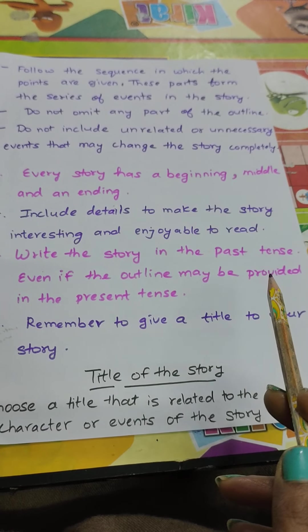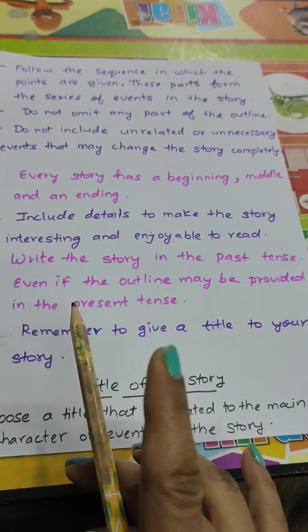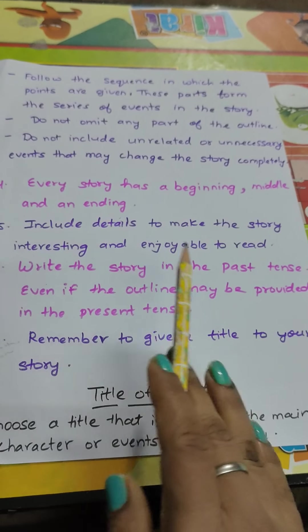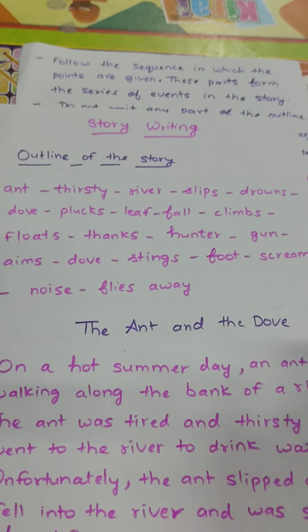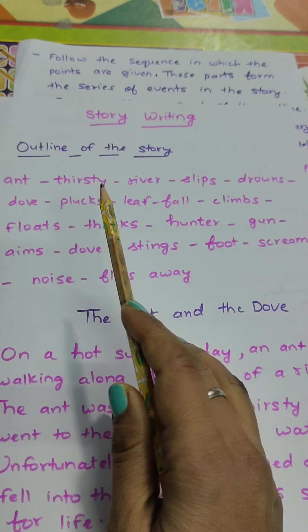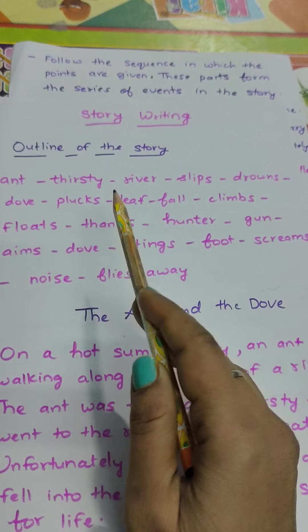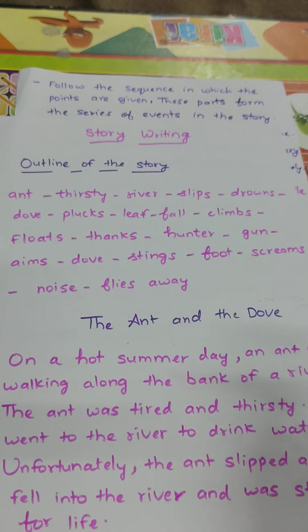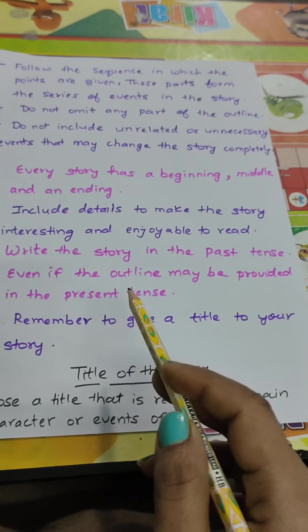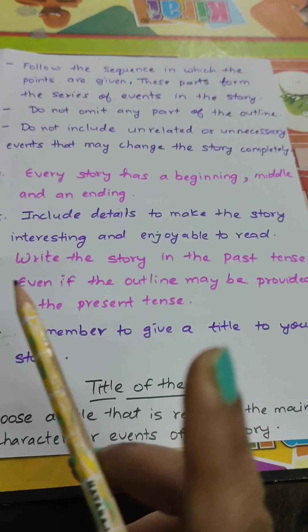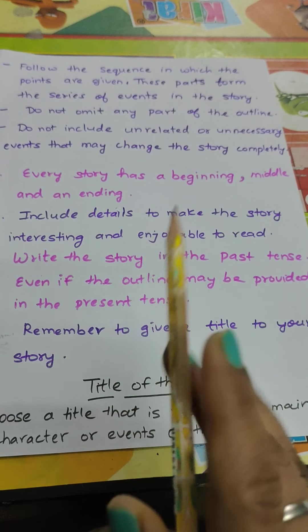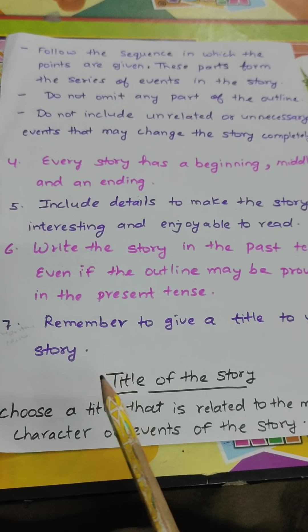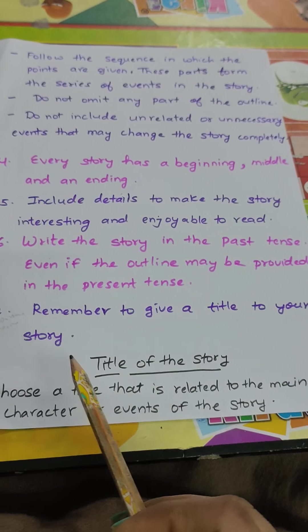Seventh: write the story in the past tense. This is a very important point — write the story in the past tense, even if the outline is provided in the present tense. As you can see, this outline uses present tense: slips, drowns, plucks, climbs, floats. But you must write the story in the past tense — always remember, write the story in the past tense, even if the outline is in the present tense.